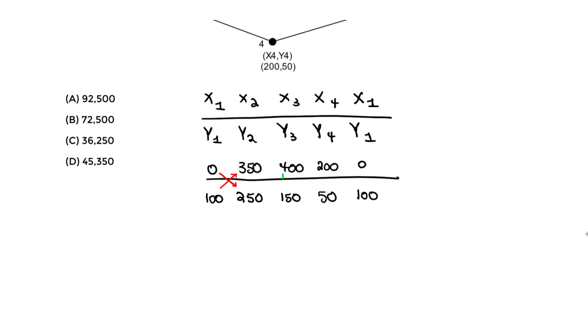Let's start with 0 times 250 minus 100 times 350, don't forget that minus. So the total area, it's going to be 2 times the area, that's why we divide by 2 at the end. So we do 0 times 250 minus 100 times 350. Now we move on to the next step, 350 times 150 minus 250 times 400. So we do plus, don't forget this plus.